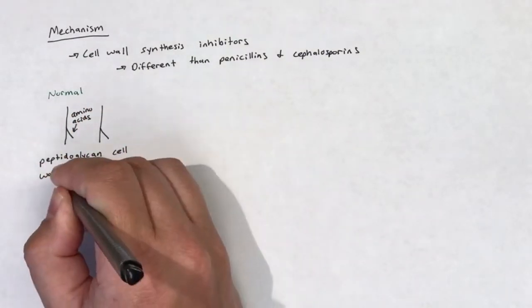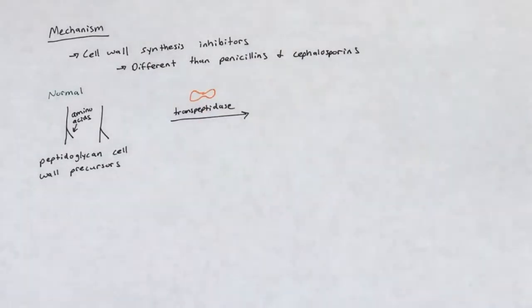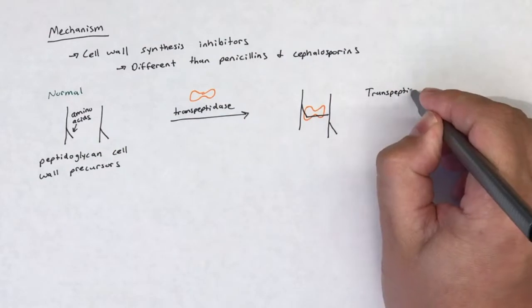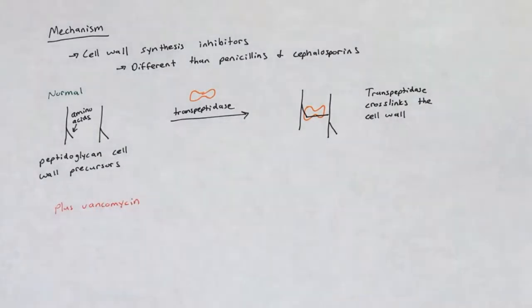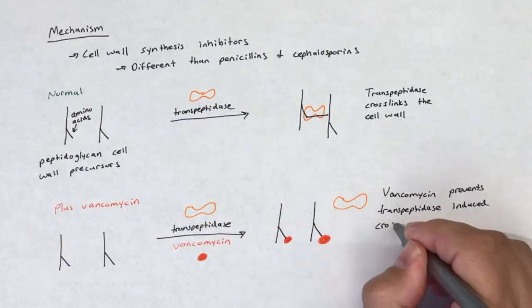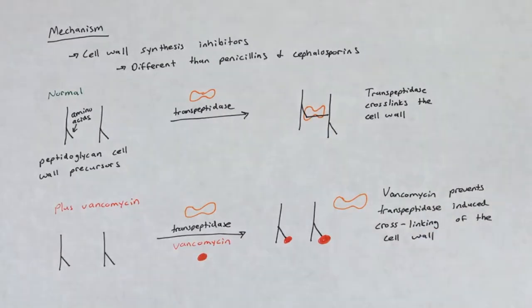Yet they have a different mechanism of action versus the beta-lactams. Glycopeptides bind to D-alanyl-D-alanine terminus of cell wall precursor units with very high affinity. This leads to inhibition of transglycosylase and prevents extension and cross-linking of the peptidoglycans.